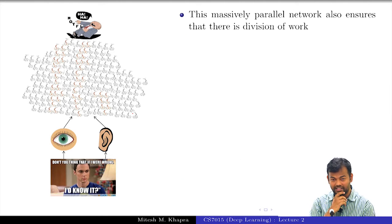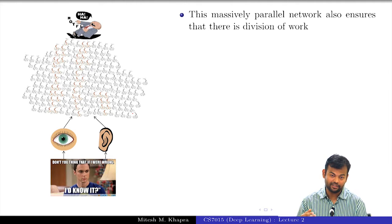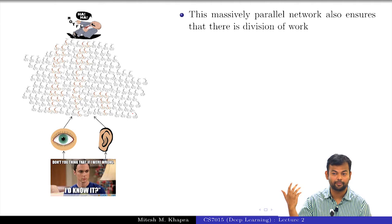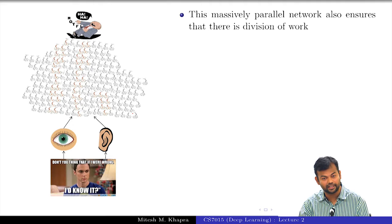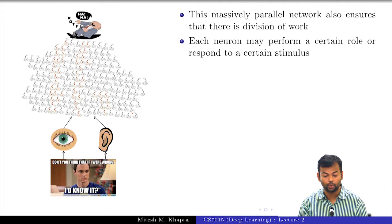This massively parallel network also ensures that there is some division of work. What I mean by that is not that every neuron is responsible for taking care of whether I should laugh or not, or not every neuron is responsible for processing visual data. Some neurons may process visual data, some neurons may process speech data and so on. So there is this division of work, every neuron has a certain role to play.